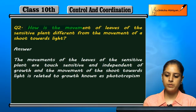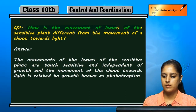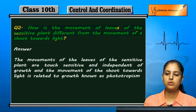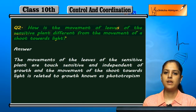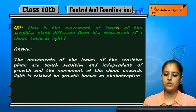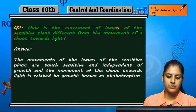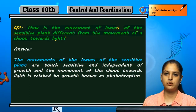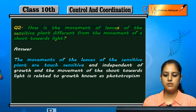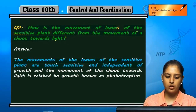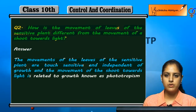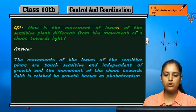How is the movement of leaves of the sensitive plant different from the movement of a shoot towards light? The movements of leaves of the sensitive plant are touch-sensitive and independent of growth, whereas the movement of the shoot towards light is related to growth and is known as phototropic.